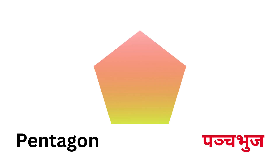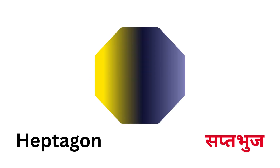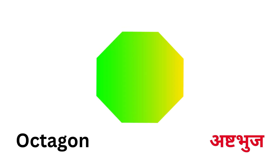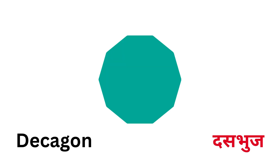Heart (Hridayakar), Pentagon (Panchbhuj), Hexagon (Shatkorn), Heptagon (Saptabhuj), Octagon (Ashtabhuj), Nonagon (Navbhuj), Decagon.